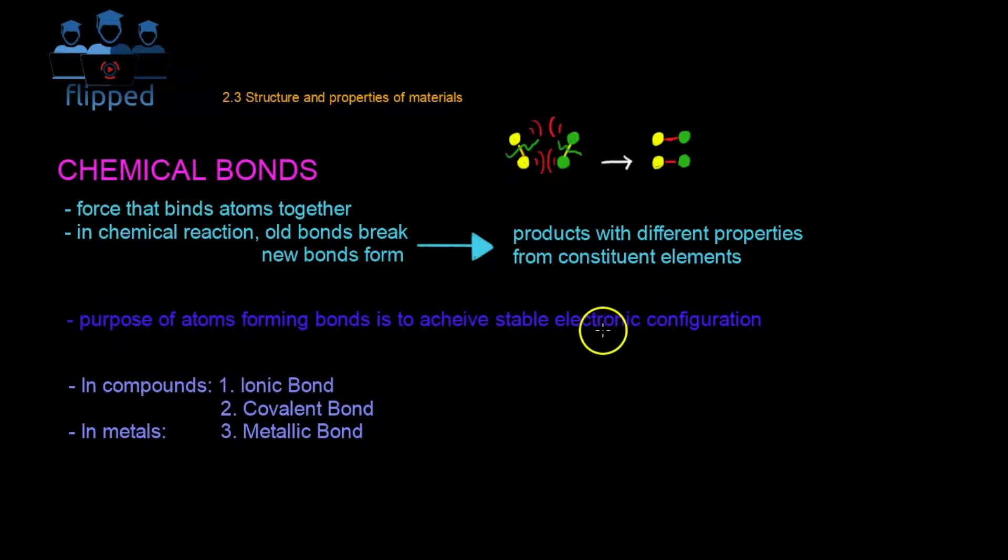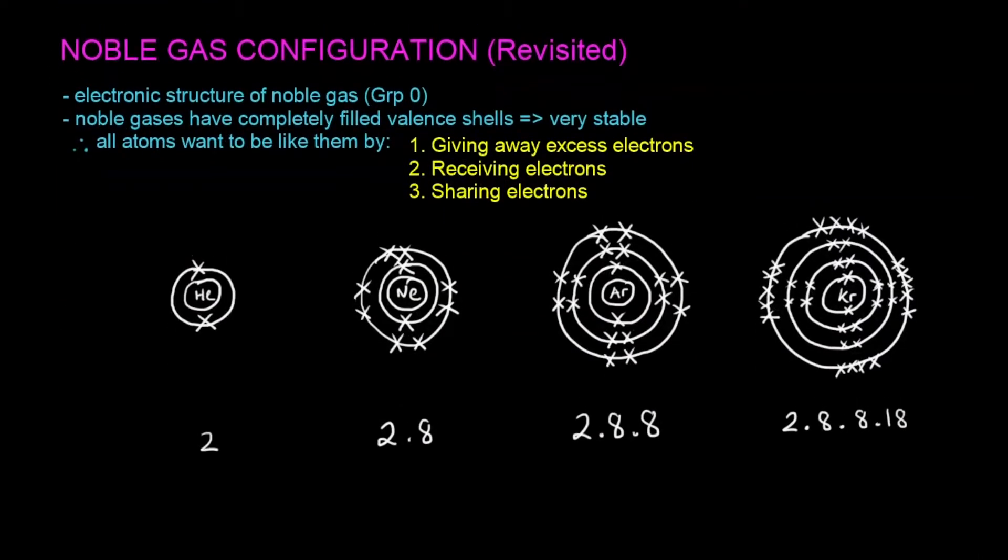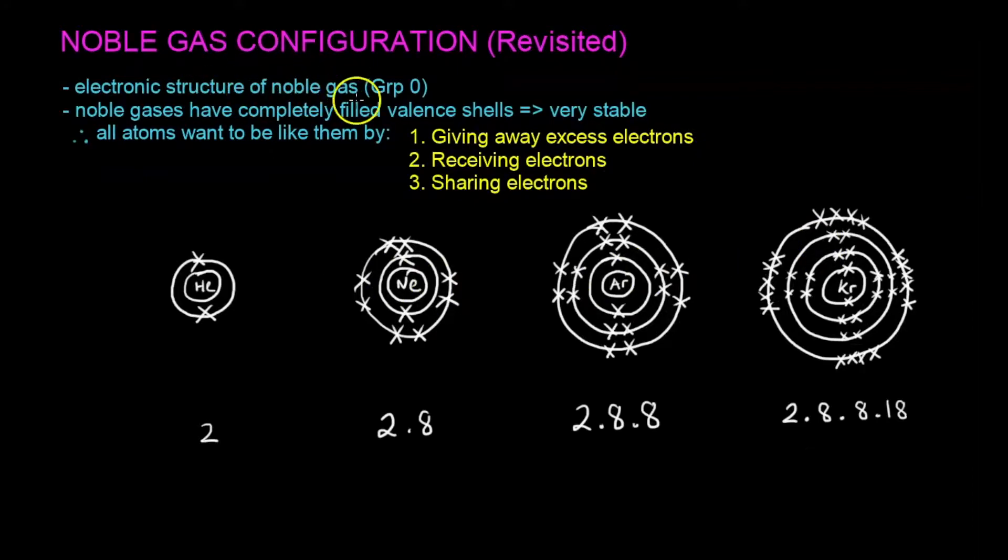Let's examine the stable electronic configuration together. Basically, stable electronic configuration is the same as noble gas configuration because noble gases are stable. We have talked about this in the atomic structure chapter, but I want to revisit it because it was a bit rushed. I think we can do a clearer explanation also. Basically, what we want to achieve for all the atoms is electronic configuration of noble gases. Basically, every atom wants to be like noble gas because noble gas have completely filled valence shell, making them very stable. And how atoms can be like them is basically three ways. First one is to give away excess electrons. Second one is to accept electrons. Third one is to share electrons. Each of them will form different bonds.